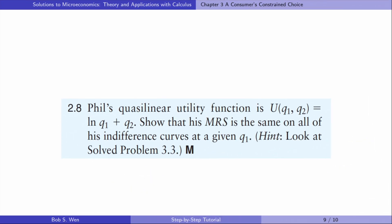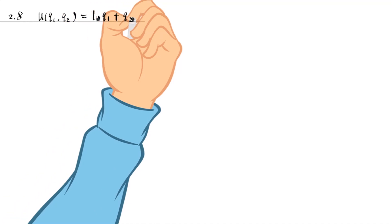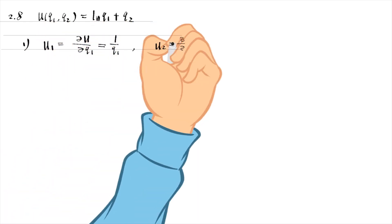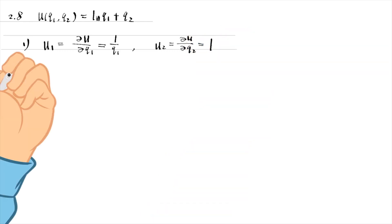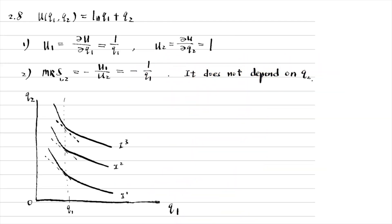Let's find answers to exercise 2.8. The quasilinear utility function is as follows. Show that the marginal rate of substitution is the same on all the indifference curves at a given Q1. This exercise asks us to show that the marginal rate of substitution for the quasilinear utility function does not depend on Q2. In the first step, we write the marginal utilities of good one and good two. In the second step, we express the MRS in terms of the marginal utilities and find that it is a function of Q1 only. The marginal rate of substitution does not depend on Q2.